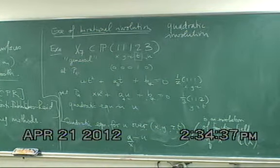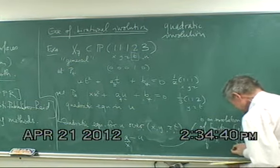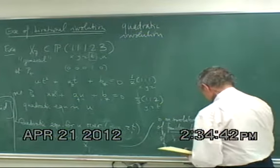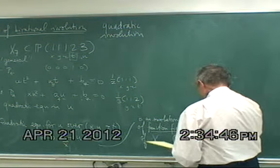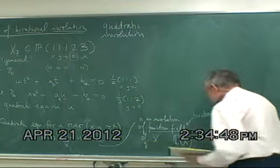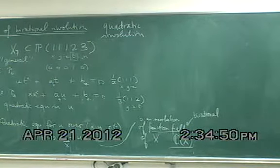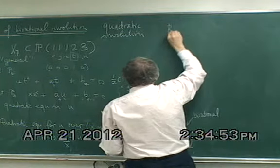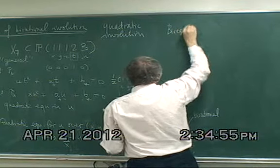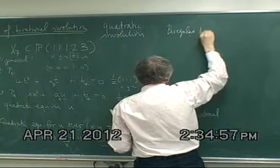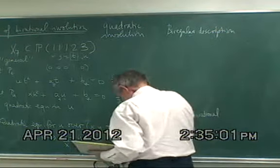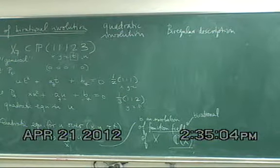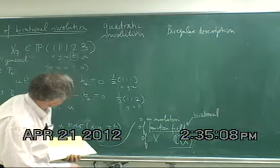That's a birational description, because it's talking about the function field. This is the thing that's birational. And I want a biregular description of this. I'll explain in the second half that there's a simpler model of this that you can already see in the case of cubic surfaces.